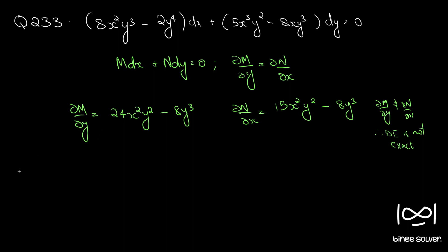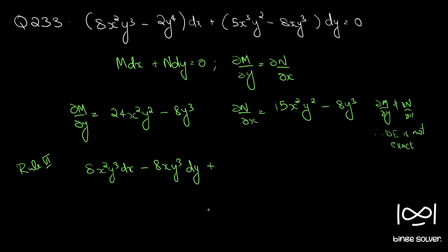We are going to use Rule 6 here. To apply Rule 6, we have to make some rearrangements and show that the equation is in a particular form. We rearrange the equation as: 8x²y³ dx plus 5x³y² dy plus minus 2y⁴ dx minus 8xy³ dy equal to 0.